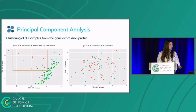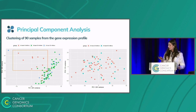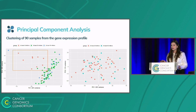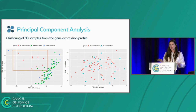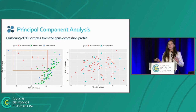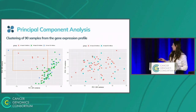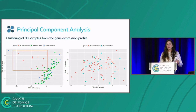The first result is the principal component analysis clustering all 90 samples by gene expression profile. As we can see in the first figure, we have two groups. The group in red had fewer than 20 million reads and clustered separately from the others, making them outliers. After excluding these samples, the second figure shows a homogeneous clustering for samples with at least 20 million reads. Subsequent variant calling and gene fusion analyses were performed on the remaining 72 samples.